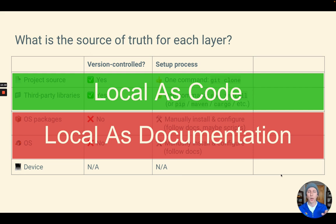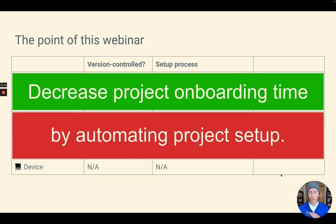Doing things manually causes a lot of problems. It can cause drift between different team members. It can cause bugs where you develop on one machine and it works there, but doesn't work on another machine or in production. It can lead to delays because you need to set all of this up before you can start, and it can take quite a while. If you do a factory reset or switch from one project to another, you have to change operating system packages, your Node version, and so on. The goal of this webinar is that whether you're an open source project or an enterprise team, you can reduce project onboarding time by automating those setup steps.